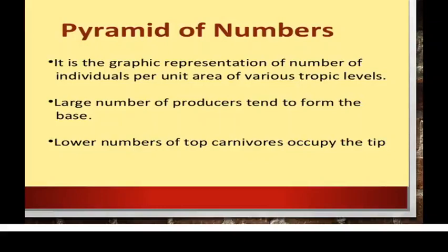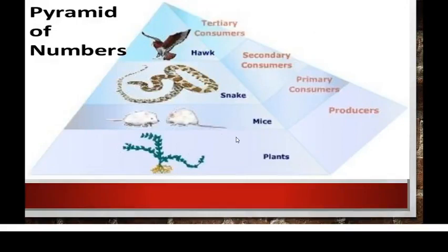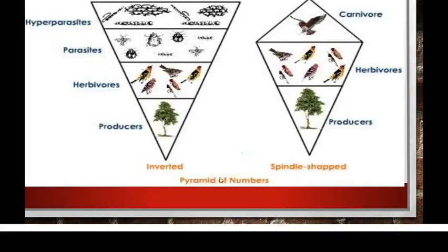The pyramid of numbers is upright because the number of individuals at successive trophic levels keeps decreasing. The graphical representation is based on the number of individuals per unit area at various trophic levels. The large number of producers forms the base, and the top carnivores form the tip. For example: producers are plants, primary consumers are mice, secondary consumers are snakes, and the tertiary consumers are hawks.